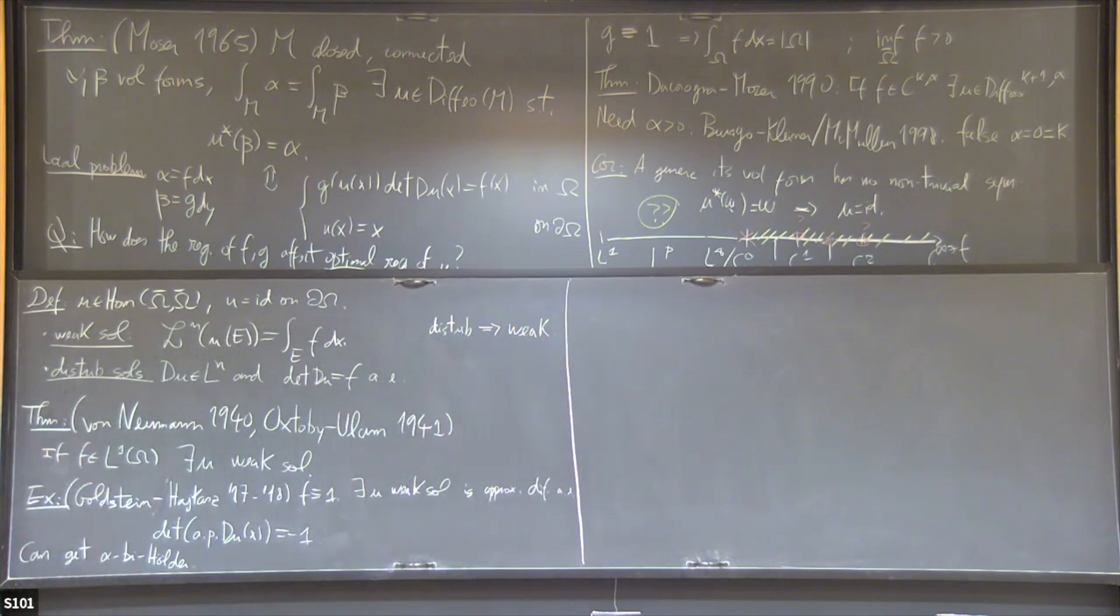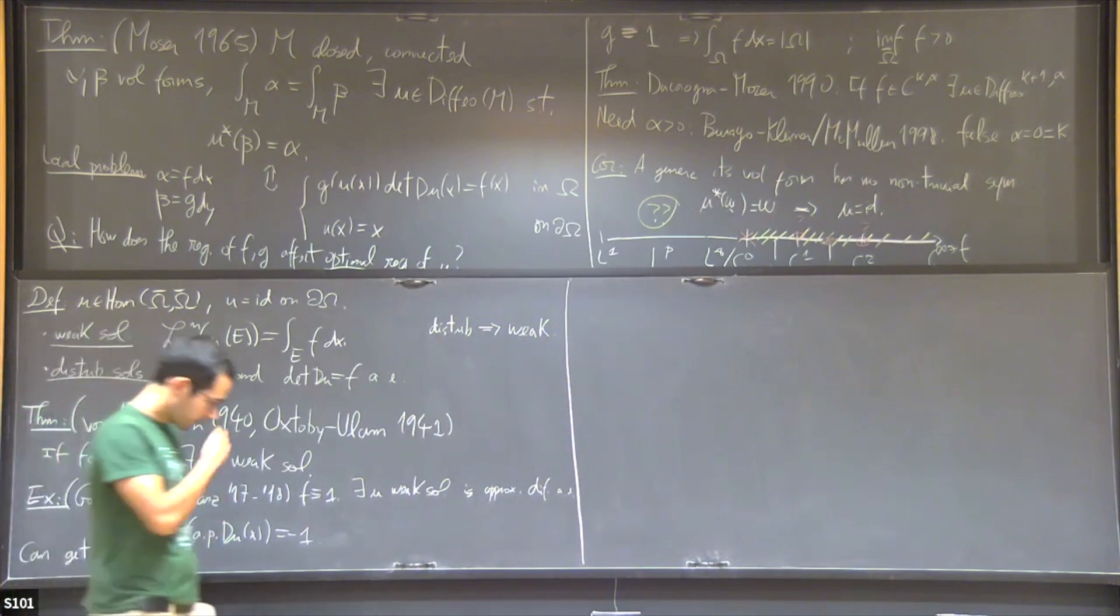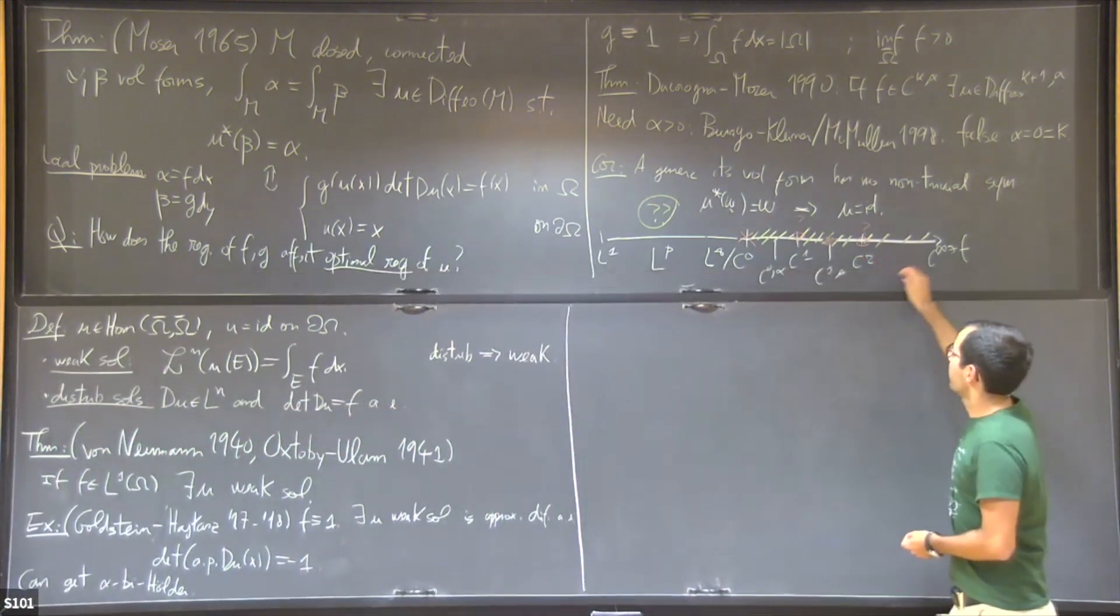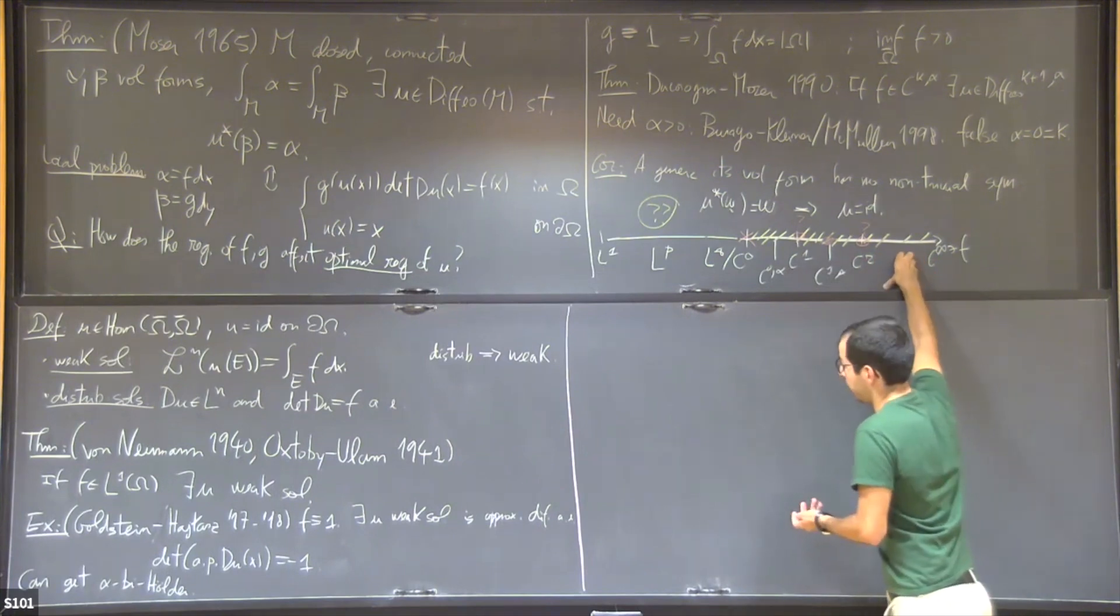Clearly L^n is the reason I pick n here because I want this guy to be integrable, the determinant of DU is of degree n. This is clearly the least regularity that I need to make sense of my problem. Indeed, distributional solutions are weak solutions. And I would argue that for this problem, they are really the right notion of solutions.